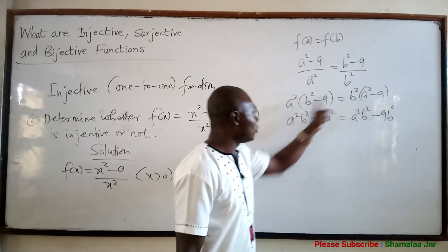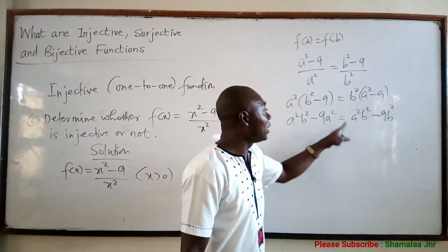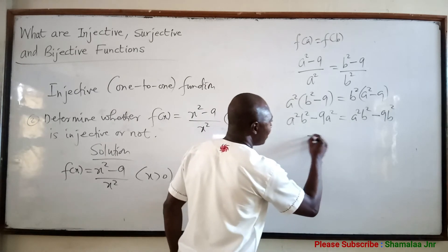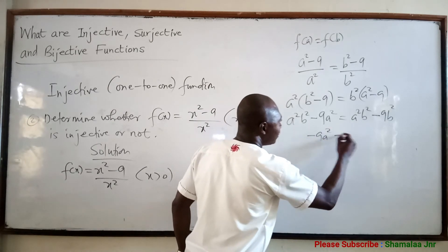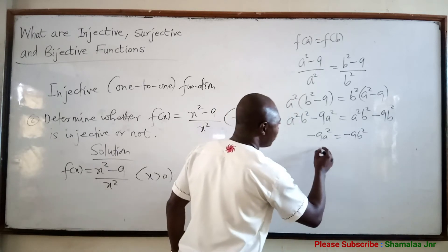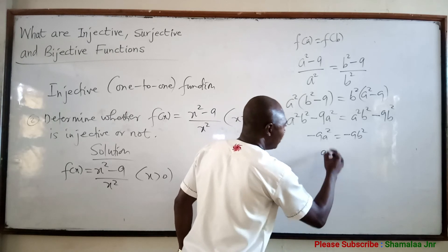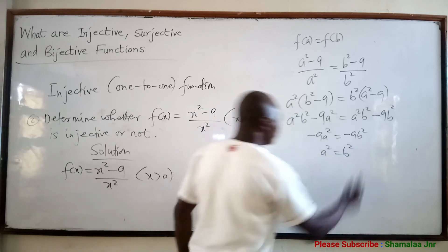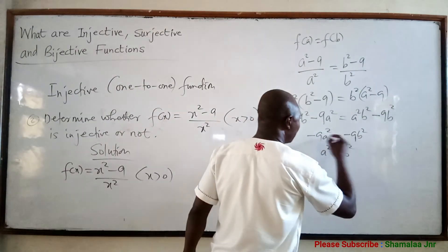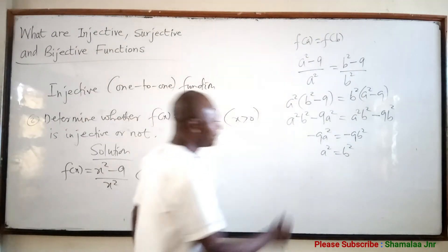So we are left with −9A² = −9B². Negative cancels negative, and 9 cancels 9, so we have A² = B². Dividing both sides by 9, we have A² = B².